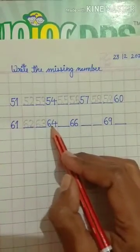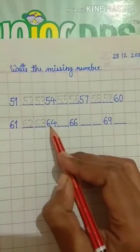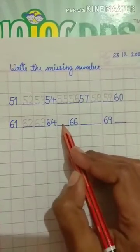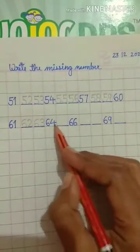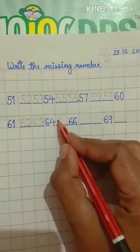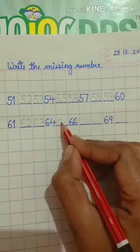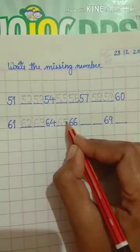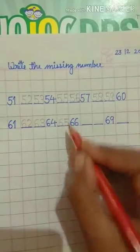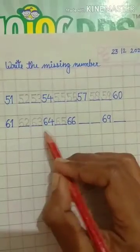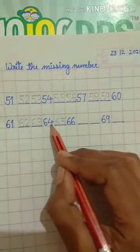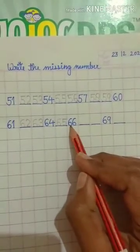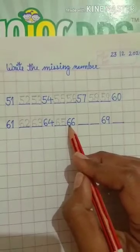63 comes after 62. Which number comes after 64? 65. 65 comes after 64. Which number is this? This is number 66.